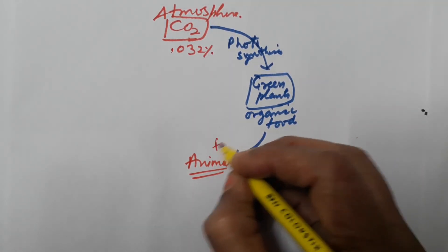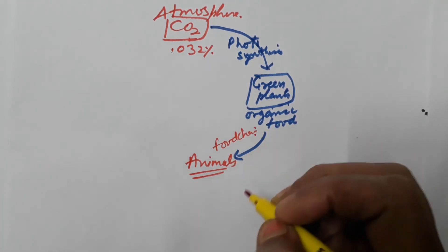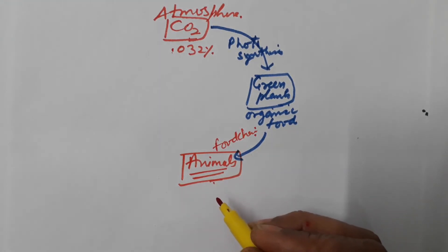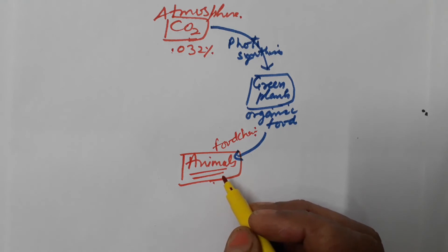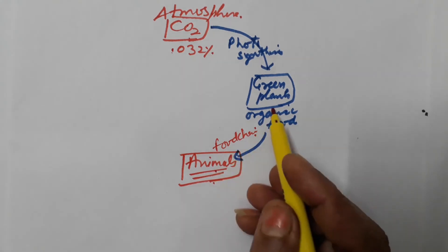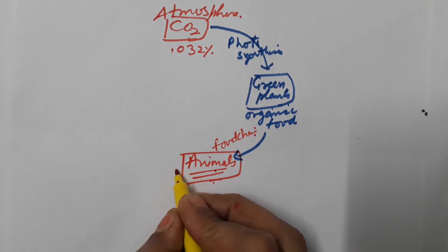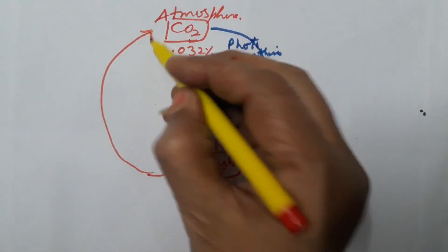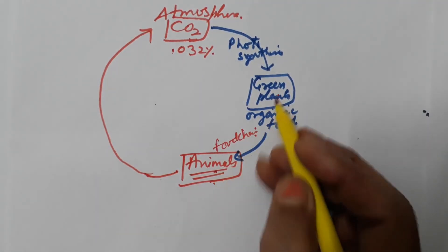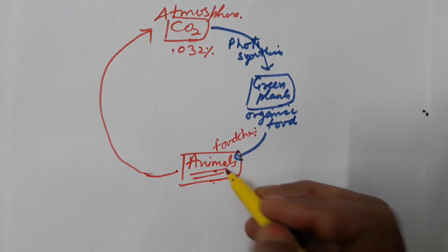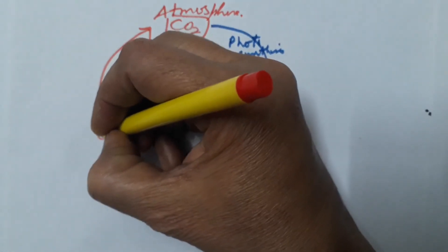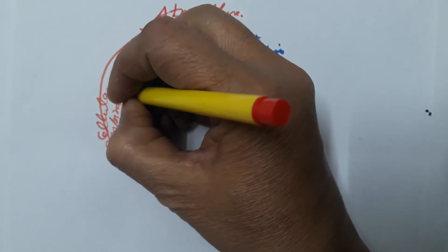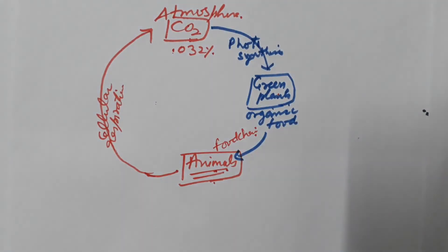This organic food passes through the food chain. Inside the body of the living organism, energy is released. The food present in the body of the living organism is oxidized and the process is known as cellular respiration. In the process of cellular respiration, energy released is utilized by these animals in their daily activities and CO2 is also released, which goes into the atmosphere.